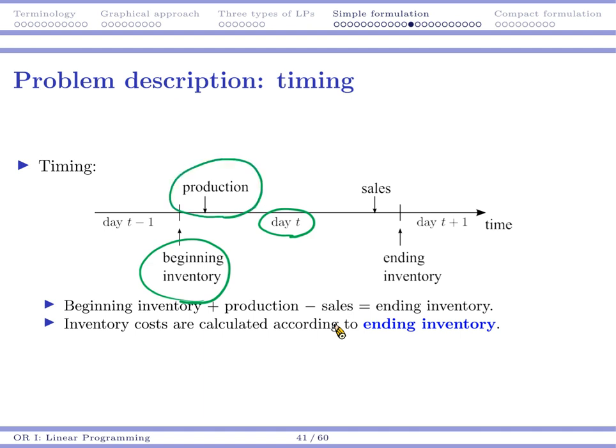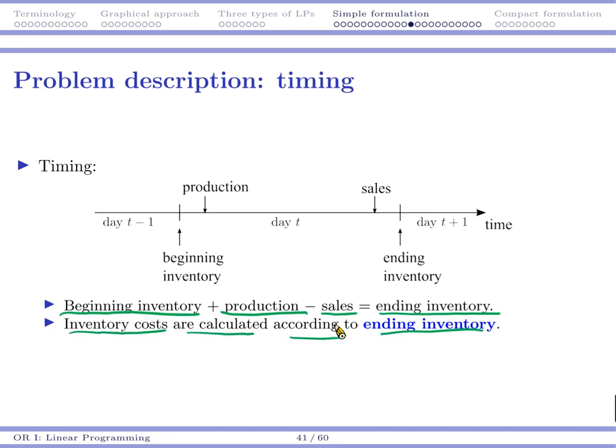And then you are going to make some production. And for that day, you may quickly make some products and then you may sell them. And lastly, you have your ending inventory when you go to sleep. So pretty much, we have this equation. Your beginning inventory plus the amount you produce minus the amount you sell becomes your ending inventory.